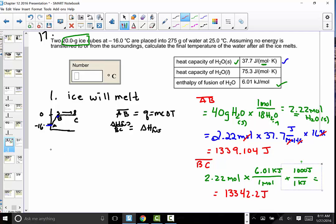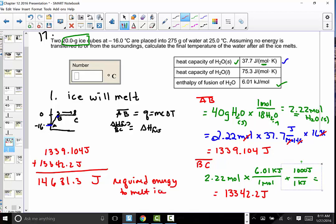Let's sum the two. We have 1339.104 from our first line segment, added to 13342.2 from our second line segment. What is the sum for the total amount of energy? And I'm finding that to be 14681.304 joules of energy. This is the required energy to melt the ice.